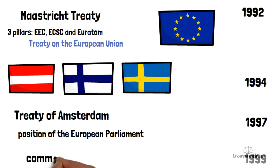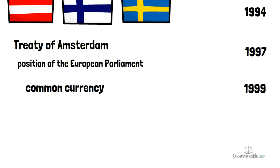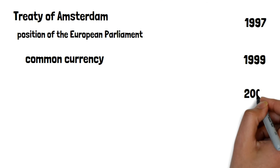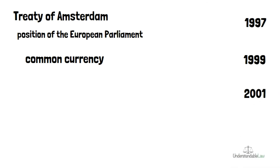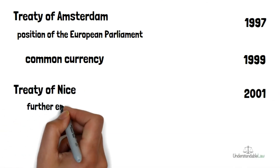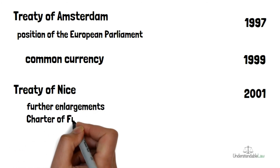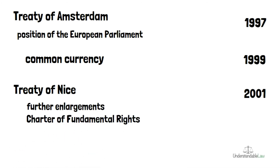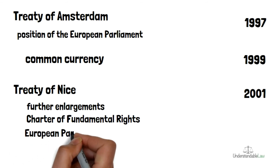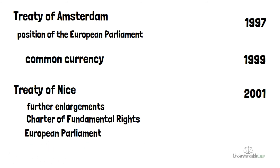In 2001, the Treaty of Nice was signed with the aim of preparing the European Union for further enlargements. The Charter of Fundamental Rights was signed, and the European Parliament was given legislative and controlling powers.